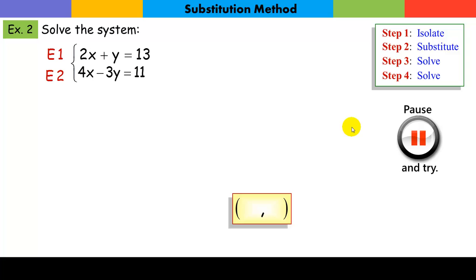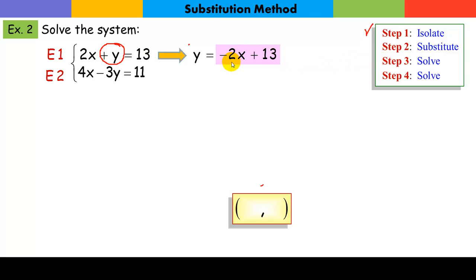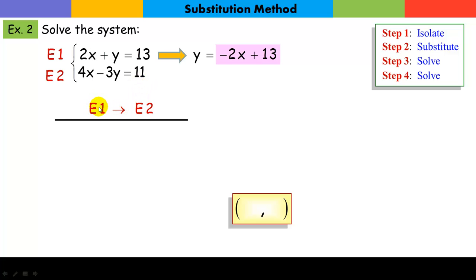Let's try another one. I've set it up here — remember, the solution is a point. Our first step is to isolate a variable. The one I want to isolate is y; it will be fairly easy. I'm going to subtract 2x from both sides of the equation, getting y alone. Now that I have y alone, it's isolated, and I'm ready for my next step: substitute. I'm going to take this and substitute it into equation two wherever I see y — right here.